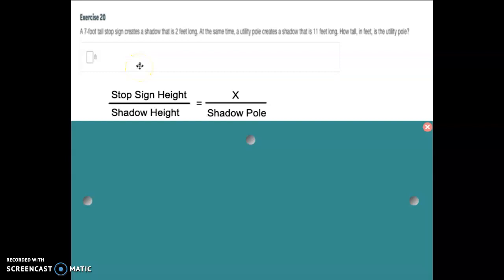So yesterday in Math, in our review, you should have seen this problem. A 7-foot tall stop sign creates a shadow of 2 feet. And at the same time, a utility pole creates a shadow that is 11 feet long. How tall is the utility pole?